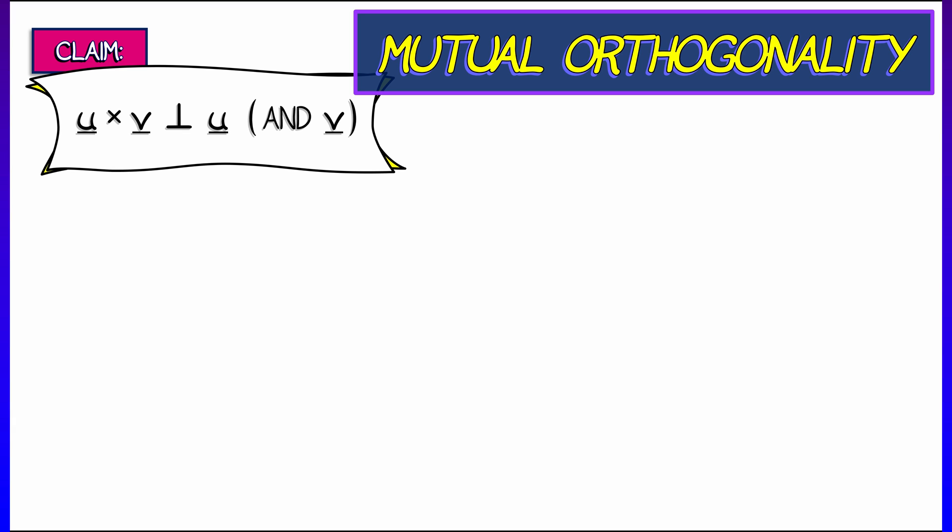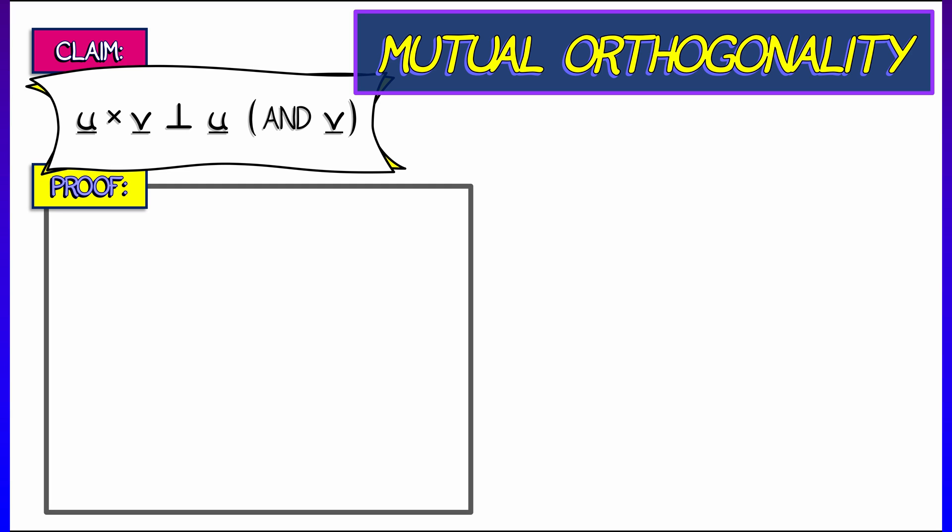The first thing is that the cross-product is orthogonal to both of its factors. So u cross v is orthogonal to u and to v. Now, how would you prove something like that?